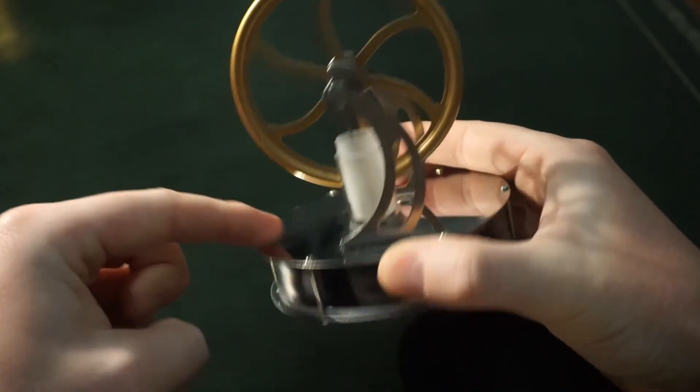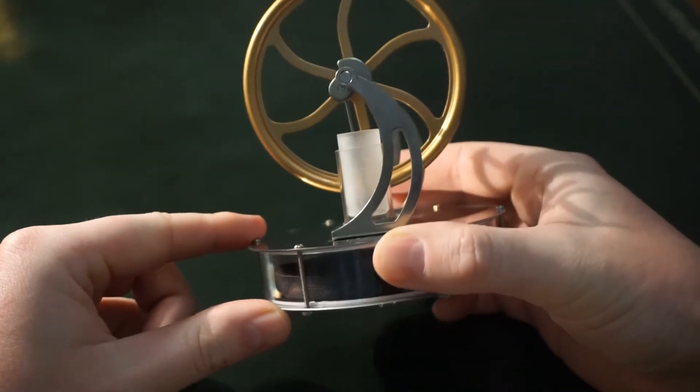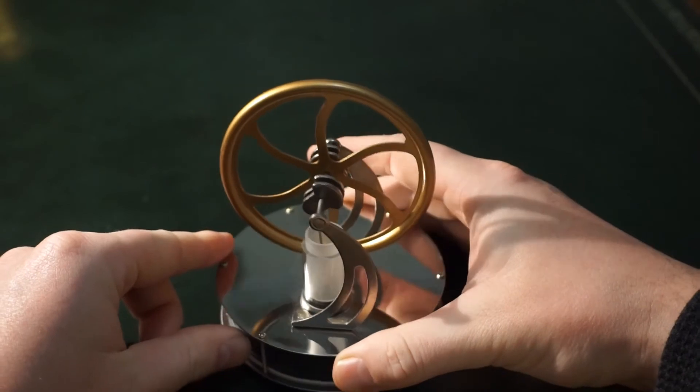So we have a top plate here and a bottom plate and the bigger the temperature difference between these two plates, the faster it spins. So let's see how it works.